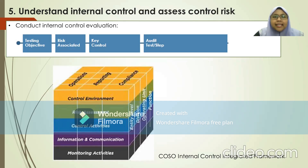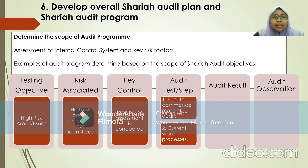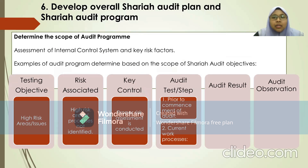The fifth process is to understand the internal controls and assess the control risk, where the Sharia auditor conducts an internal control evaluation. The sixth and last process in Phase 1 is to develop an overall Sharia audit plan and Sharia audit program. This is to determine the scope of the audit program and to assess the internal control system and key risk factors. This is an example of an audit program determined based on the scope of the Sharia audit objective.